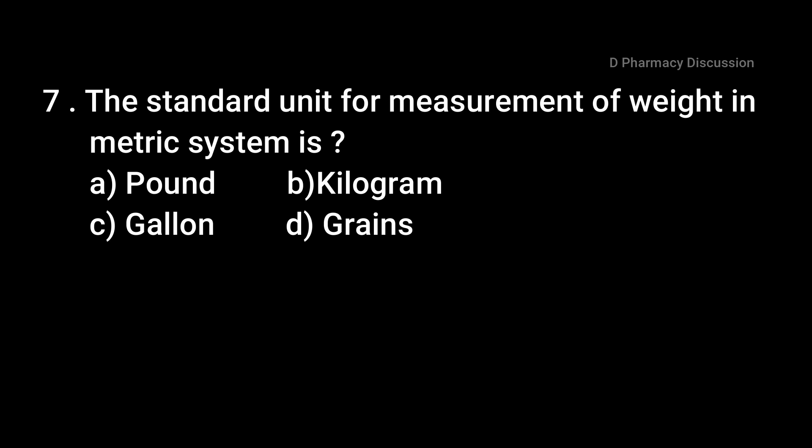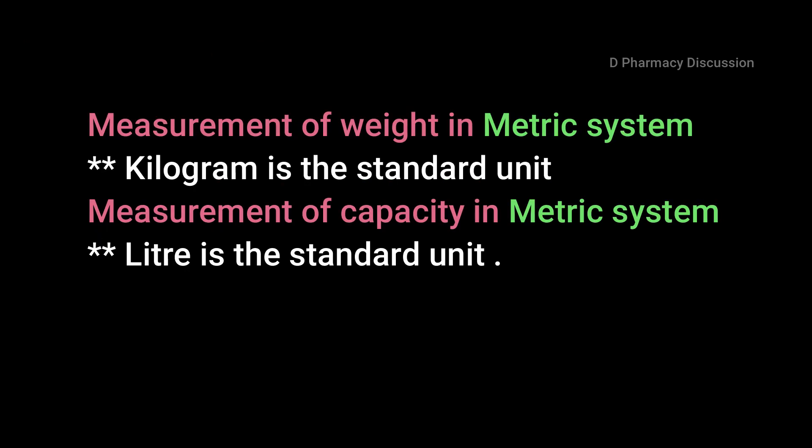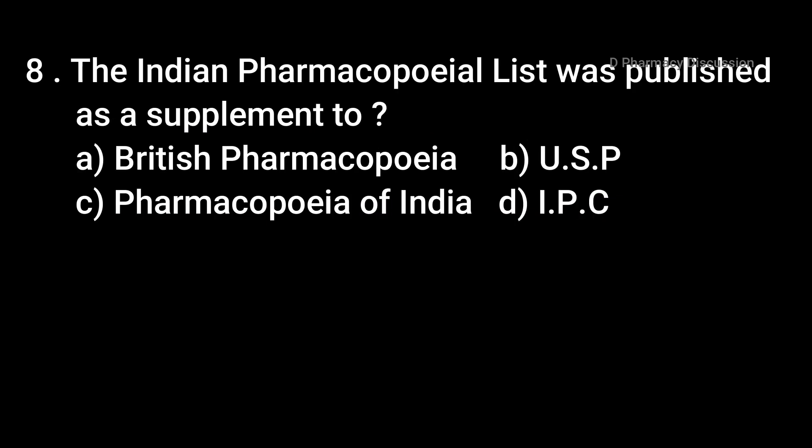Question 7: The standard unit for measurement of weight in the metric system is. Option A: pound, B: kilogram, C: gallon, and Option D: grains. Correct answer is Option B, kilogram. The two systems of weights and measurements are the imperial system and the metric system. In the imperial system, the avoirdupois system uses pound as the standard unit of weight, and the apothecary system uses grain. Gallon is the standard unit of measurement of capacity in the imperial system. Kilogram is the standard unit of weight in the metric system and liter is the standard unit of capacity.